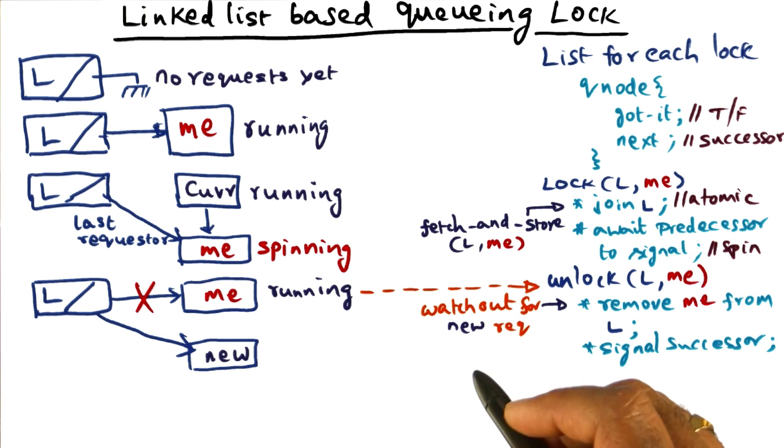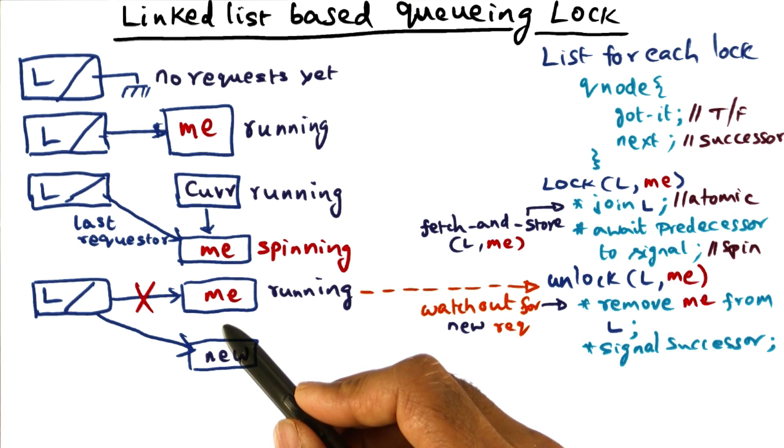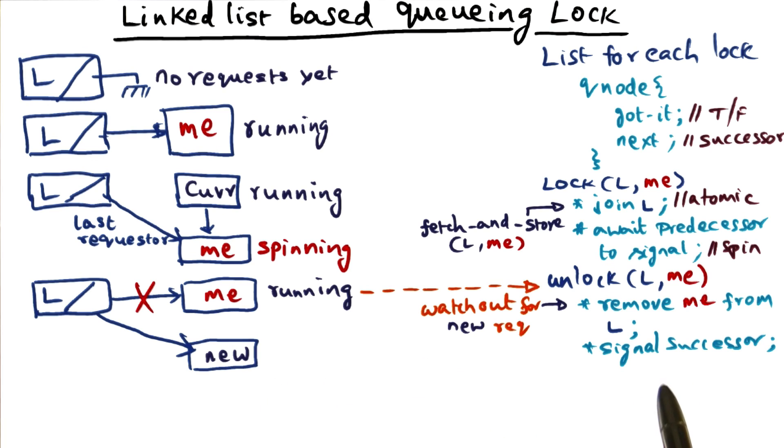So that would have been accomplished through this fetch and store. So what I have to do, when I come in and try to unlock, that is removing me from the queue, even though my next pointer is nil, I cannot trust that entirely because there could be a successor that is forming, it's just that that formation of the list is not complete yet.